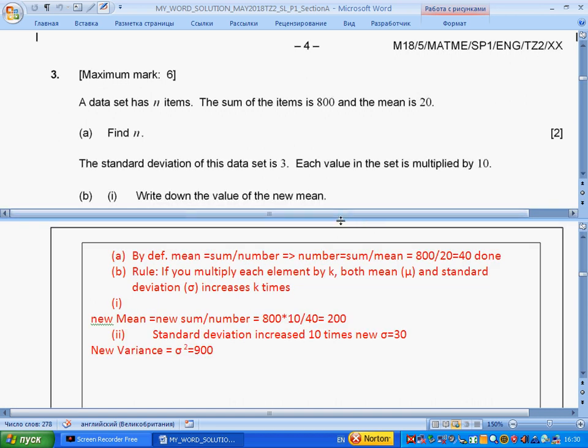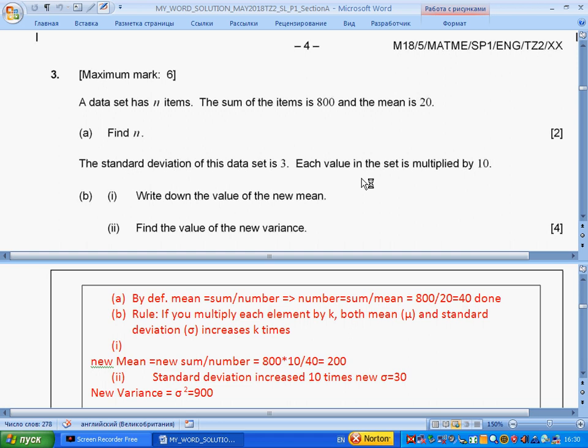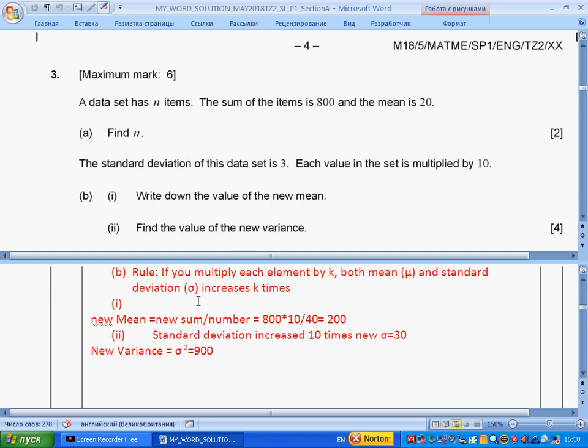The standard deviation of the set is 3. Each value in the set is multiplied by 10. Write down the value of the new mean and find the value of the new variance. Rule: if you multiply each element by k, both mean and standard deviation increase k times. New mean becomes 200, standard deviation becomes 30, and new variance, which is sigma squared, is 900.